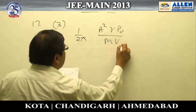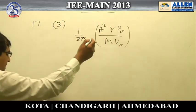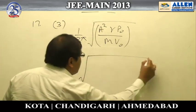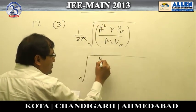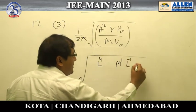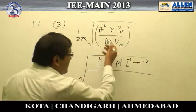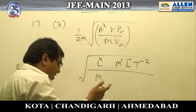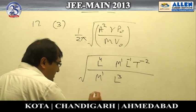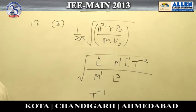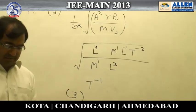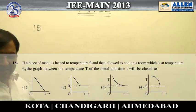Option 3 is: 1 by 2π, a² γ p-naught by m·v-naught. Checking dimensions: area is L², so a² gives L⁴; γ is dimensionless; pressure is M¹L⁻¹T⁻²; m is mass; and v-naught is volume, that is L³. The dimensions of this quantity work out to T⁻¹, which is the dimension of frequency. This is the only option with dimensions of frequency, so the correct answer is option 3.